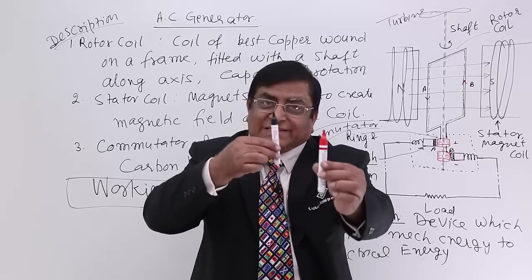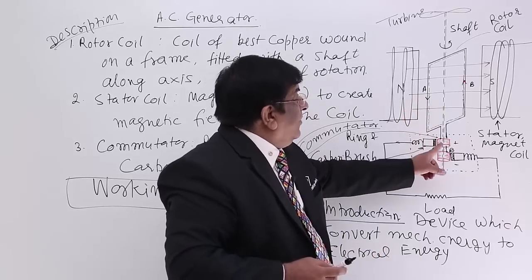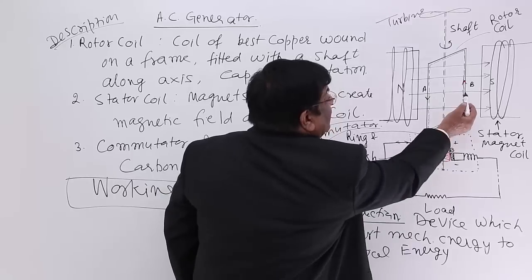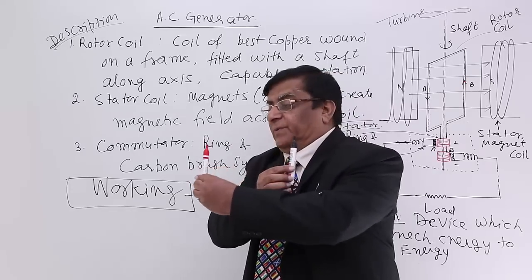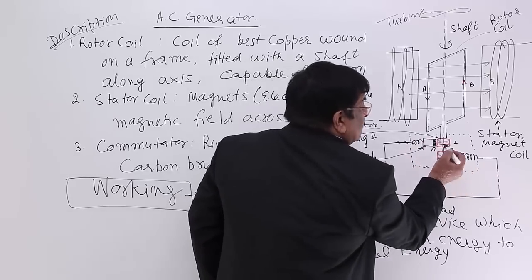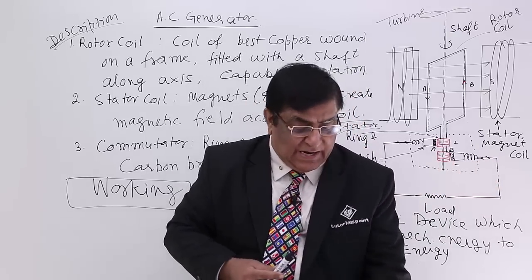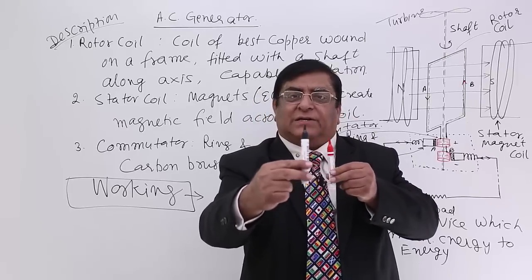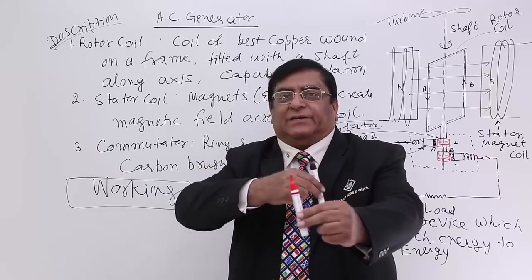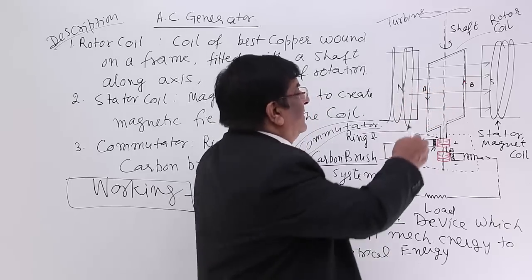After half a cycle, side A starts going up. When side A is going up, the direction of current in it reverses — current now flows in the other direction. In the coil, the current that was going one way is now going the other way. So for the first half cycle the current goes in one direction, and for the next half cycle it goes in the other direction. The current alternates — one direction, then the other direction — making one complete cycle.